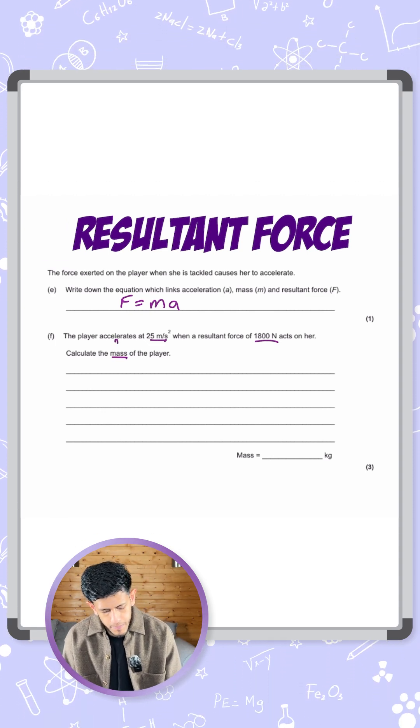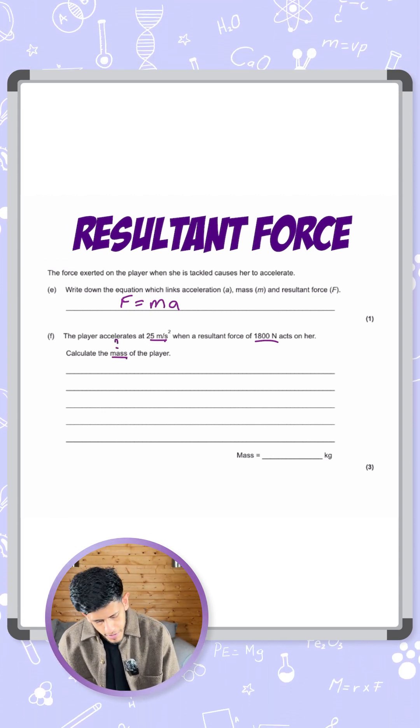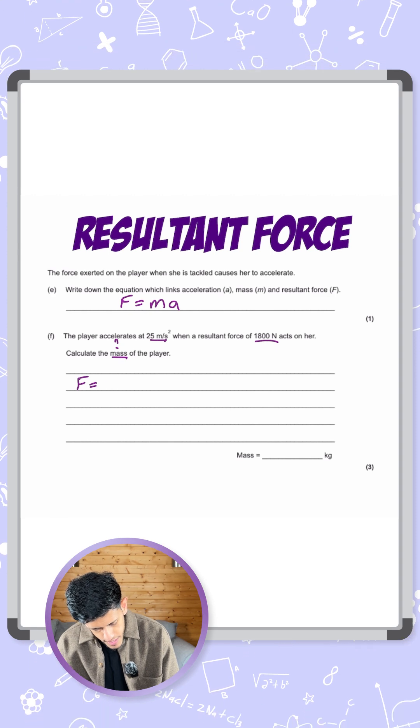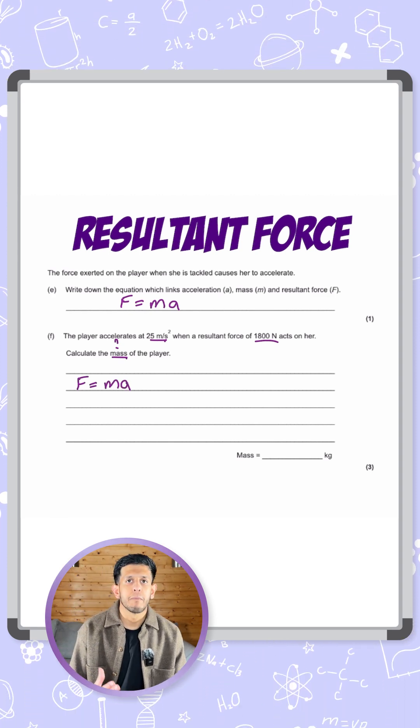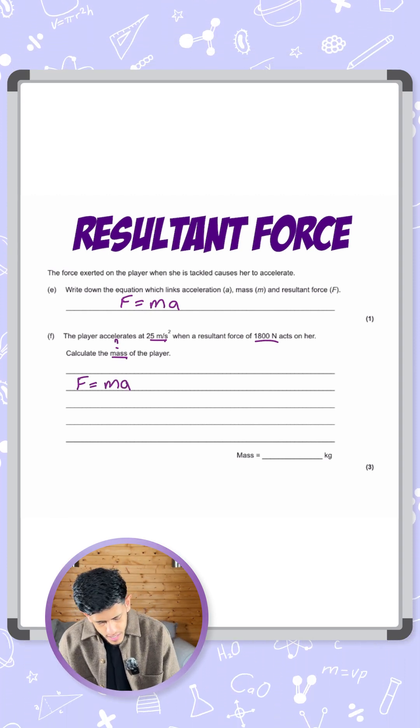So if I put the equation we've just written above, f equals ma, they want us to find the mass, so I'm going to rearrange this equation and that gives me m equals f over a.